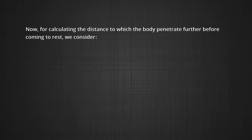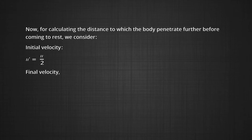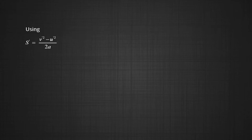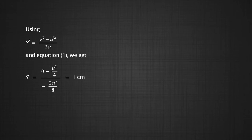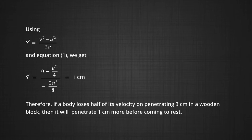For calculating the distance the body penetrates more before coming to rest, the initial velocity U' = U/2 and final velocity V' = 0, because the body must come to rest. Using S' = -(V'² - U'²) / 2A, we get the displacement equal to 1 cm. This means a body that loses half its velocity on penetrating 3 cm in a wooden block will penetrate only 1 cm more before coming to rest.